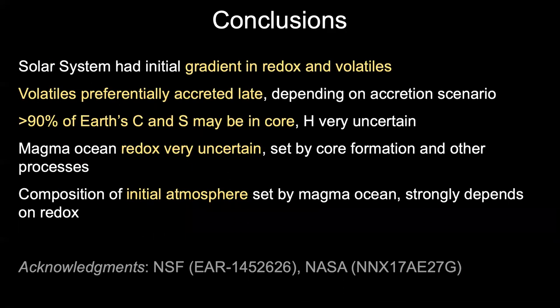To conclude: the solar system is thought to have had an initial gradient in redox and volatiles due to the temperature gradient. Earth probably preferentially accreted its volatiles later in its growth history, though this may depend on the accretion scenario. Something like more than 90% of Earth's carbon and sulfur may be in its core; with hydrogen it's much more uncertain. The redox of the magma ocean is also rather uncertain — there's much disagreement over whether it increased or decreased, set by core formation and other processes. Finally, the composition of the initial atmosphere would have been set by the magma ocean and would strongly depend on magma ocean redox.